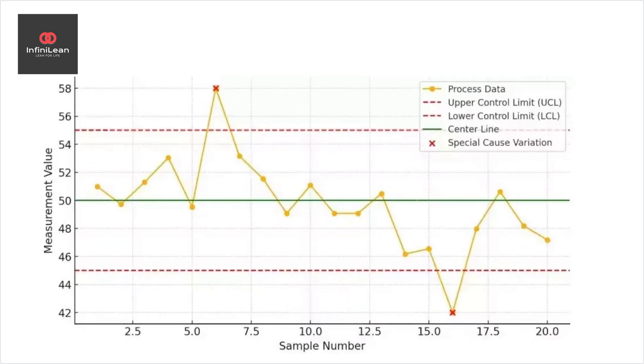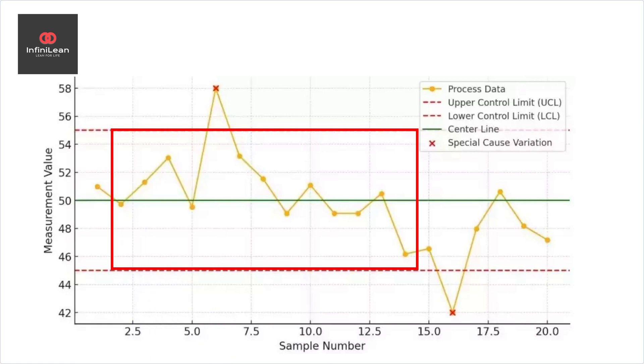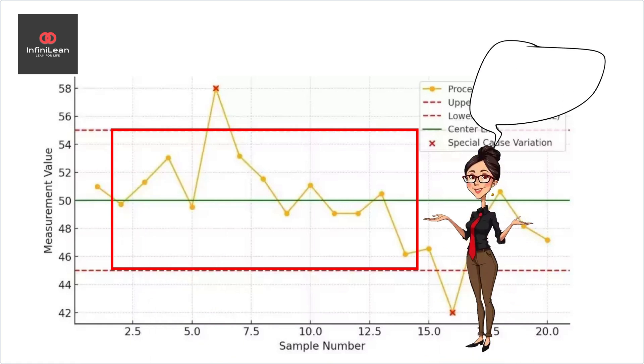In Six Sigma, variation is categorized into common cause and special cause. Common cause variation, as its name suggests, is inherent in any process and stems from random sources. It is stable and predictable within a given range.